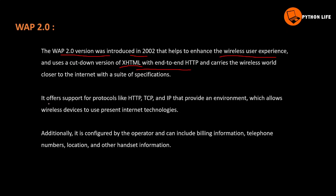WAP 2.0 offers support for services like HTTP, TCP, and IP to provide an environment that allows wireless devices to use existing internet technologies. Additionally, it is configured by the operator and can include billing information, telephone numbers, location, and other handset information.